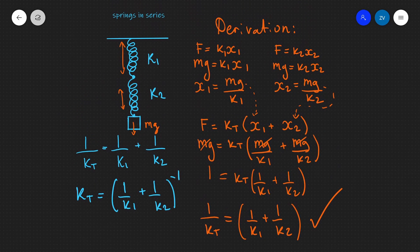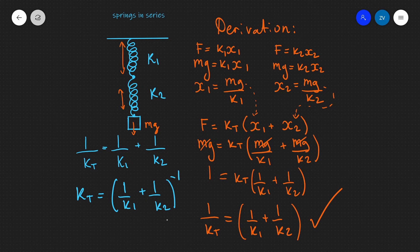So this is the derivation for the equation for springs in series, in which the total spring constant is given by 1 over k1 plus 1 over k2 — plus any additional terms for more springs — all raised to the power of minus 1.